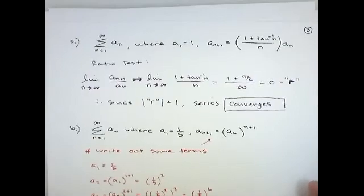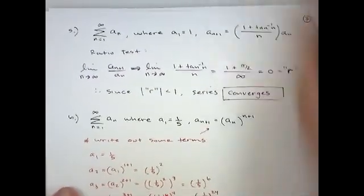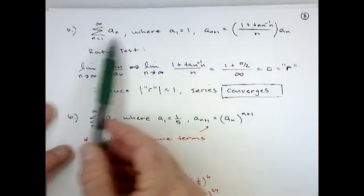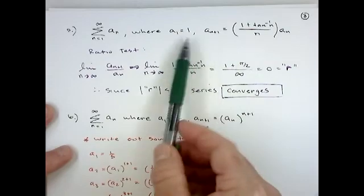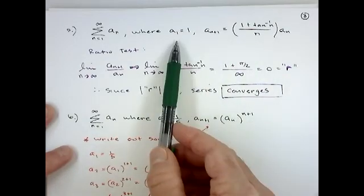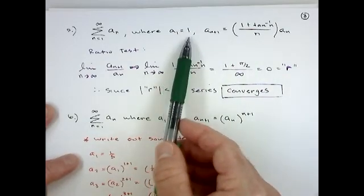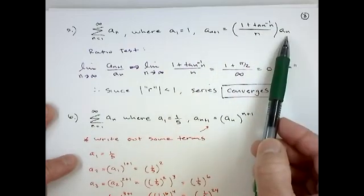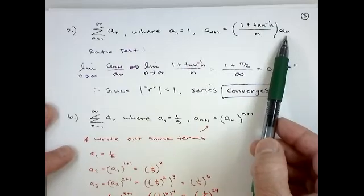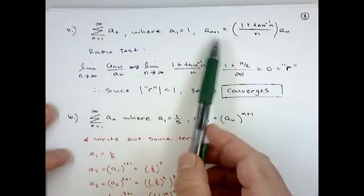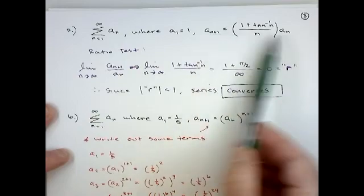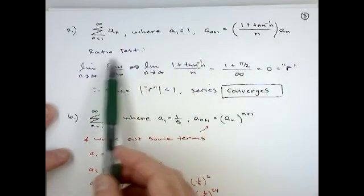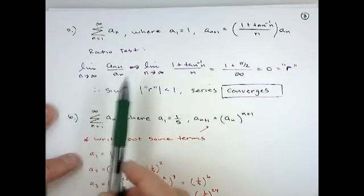Now there's a couple problems that look similar. Next, we're talking about a series here of a sub n where notice a sub n is defined recursively. We haven't seen that in a little while where the first term is one and then a sub n plus one is one plus the inverse tan of n over n times a sub n. Okay. Now if you're thinking about recursive sequences now and you see a sub n plus one and you see a sub n, now you start to hopefully think about the ratio test, which would be a good test to use here.